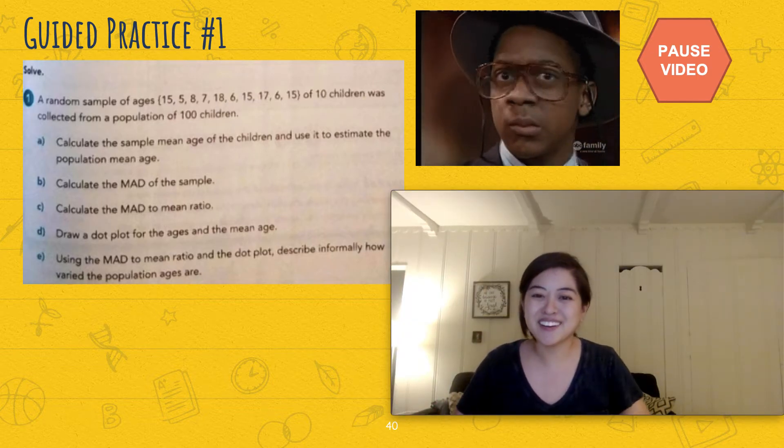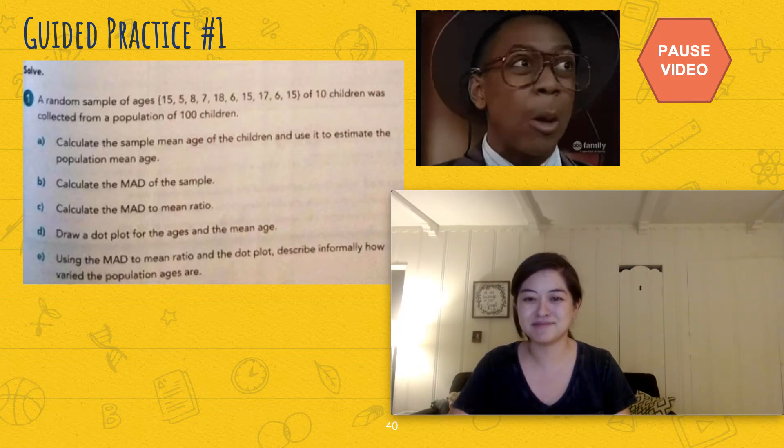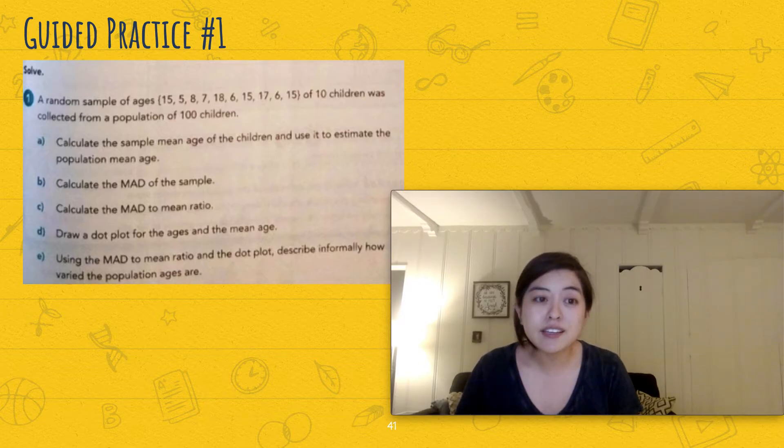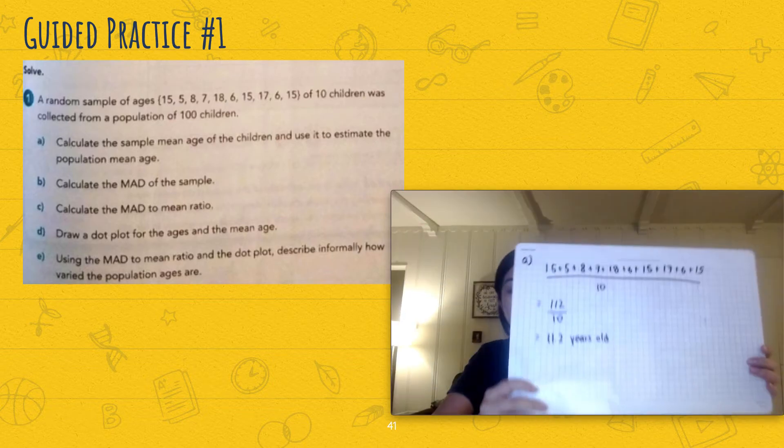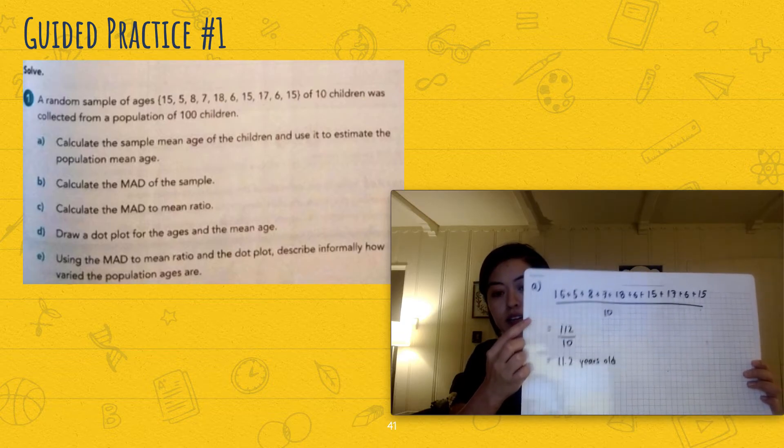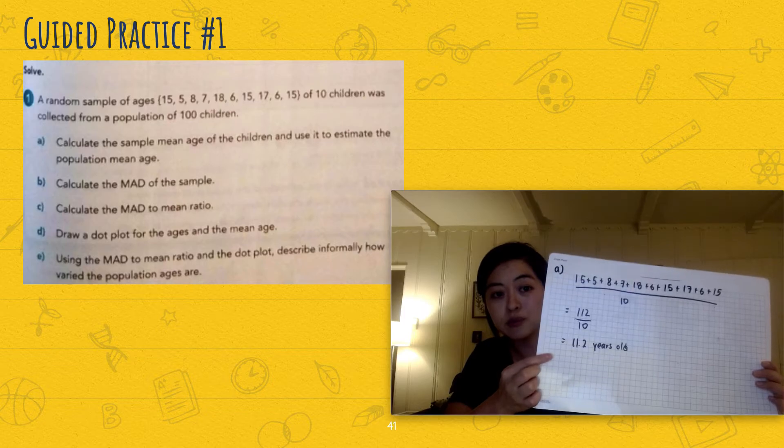All right, I'll be waiting while you work on that. Okay, how was it? So part A, I'm not going to read it because I'm assuming that you read it. Part A says you gotta calculate the sample mean, so we're going to add all the data values here, divided by 10, and you get 11.2 years old as your sample mean.